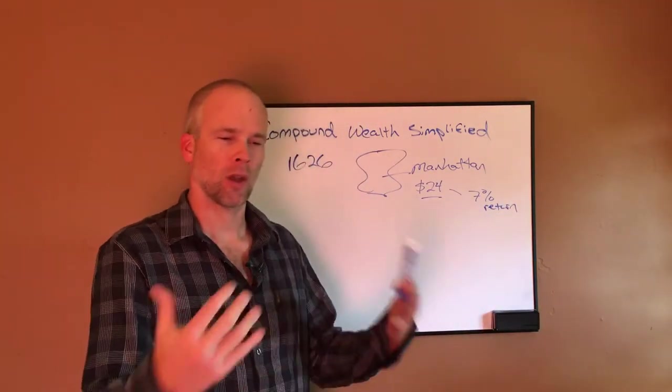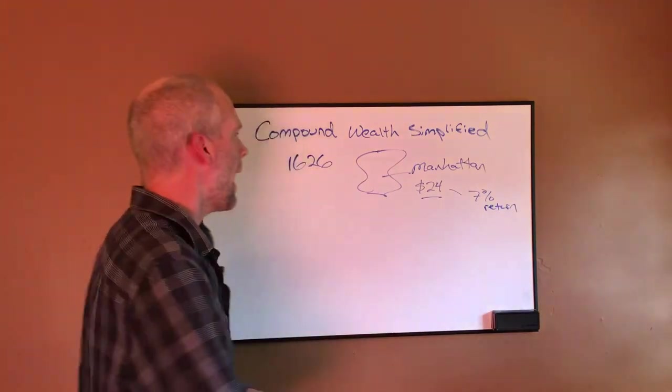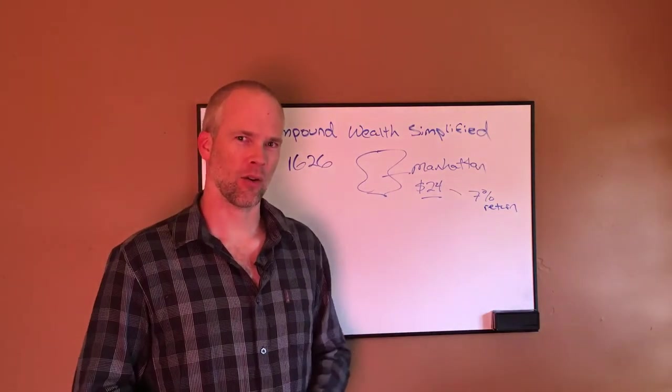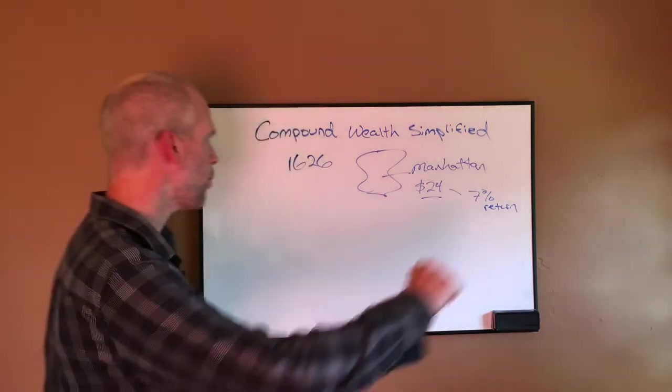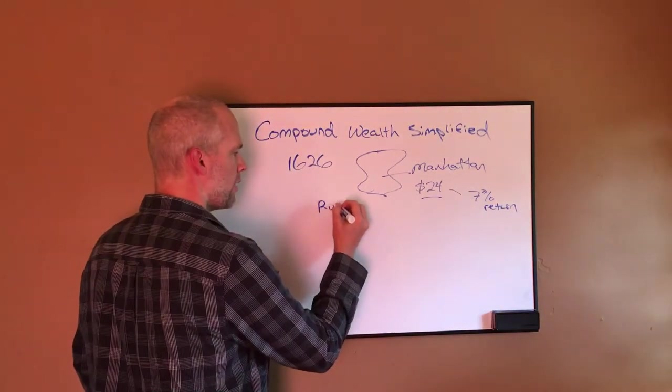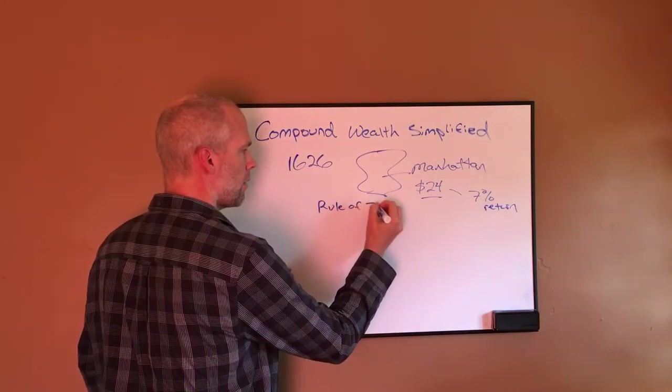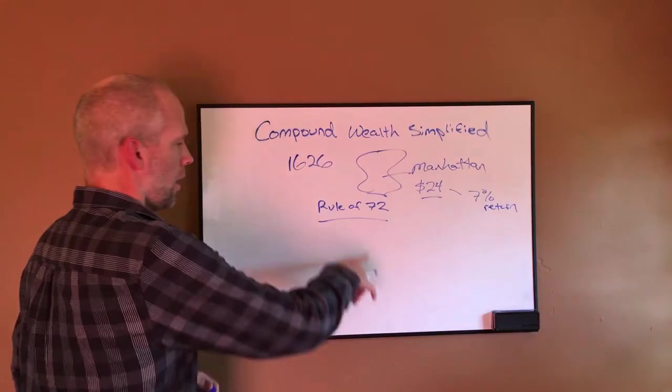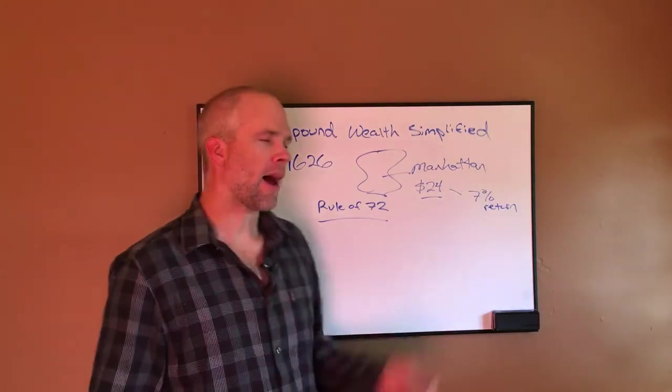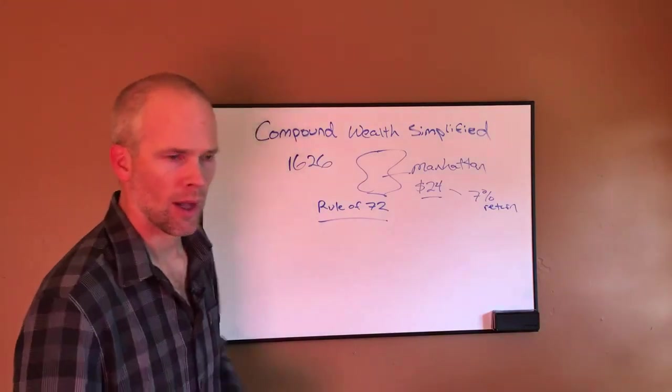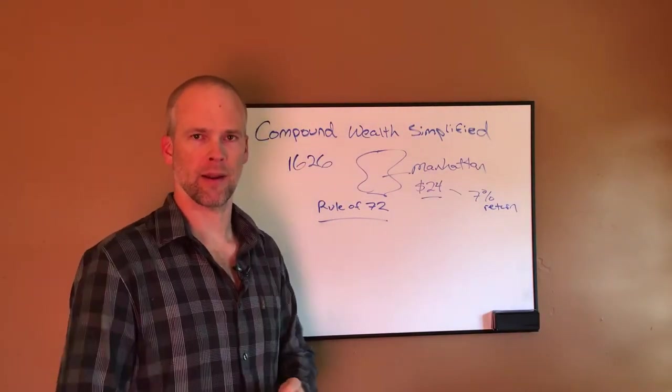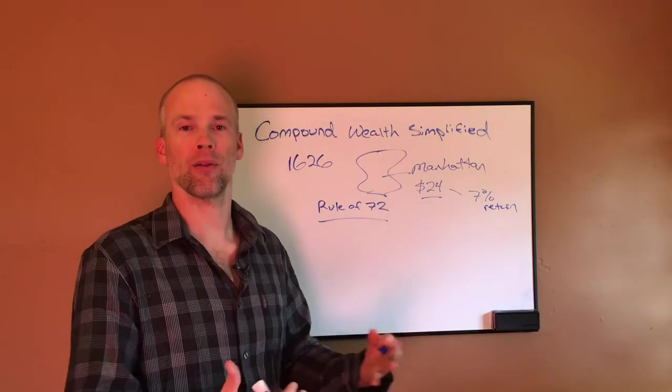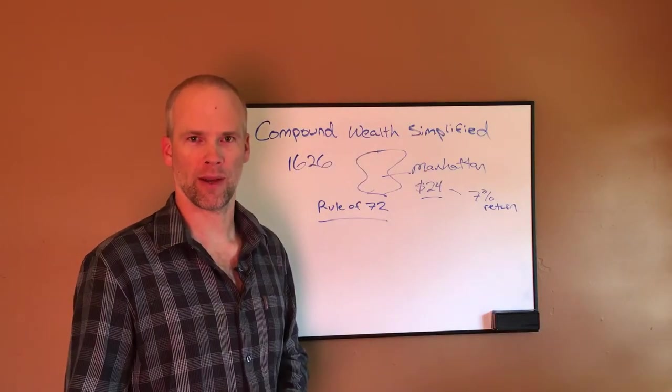So what does that mean? How much is that $24 worth today if they can grow it at 7%? So here's a simple way to figure this out. It's called the rule of 72. The rule of 72 says 72 divided by your rate of return tells you the number of years it takes to double your money. That's really the key when it comes to compound growth. How many times can you double your money?